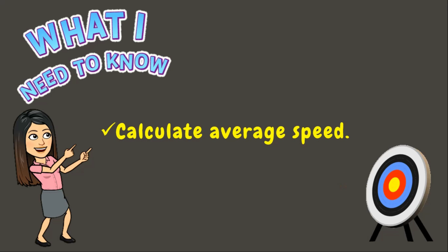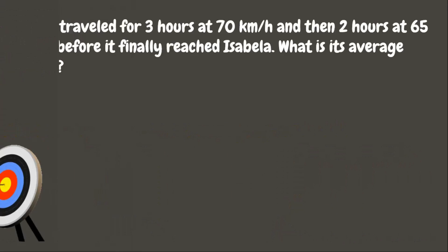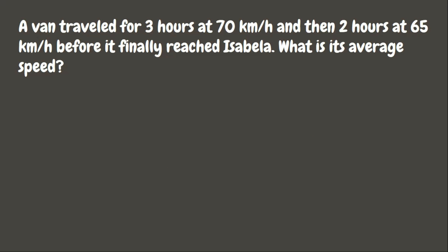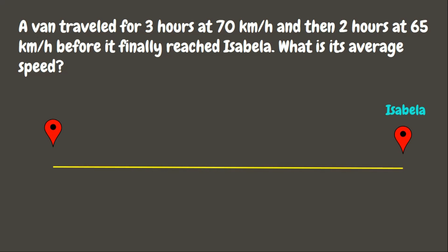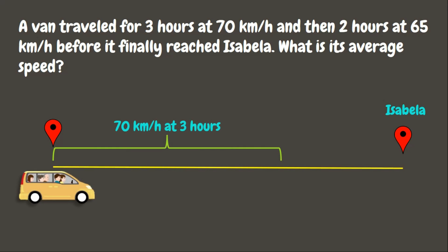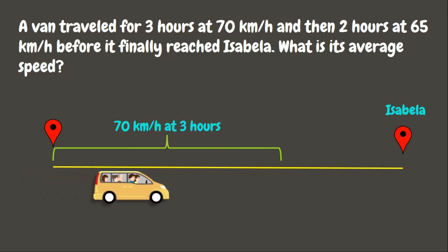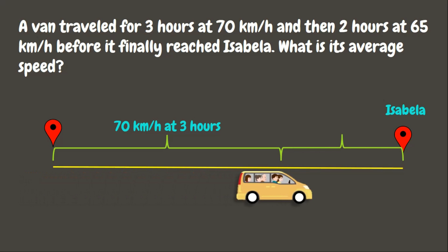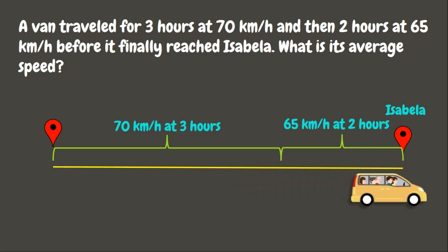Let us begin. Let's try our first example: a van traveled for three hours at 70 kilometers per hour, and then two hours at 65 kilometers per hour before it finally reached Isabella. What is its average speed?